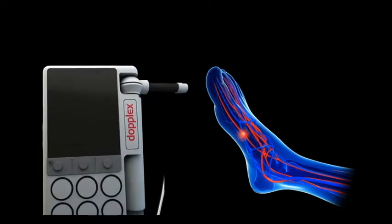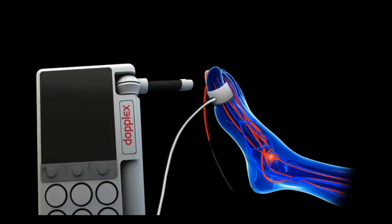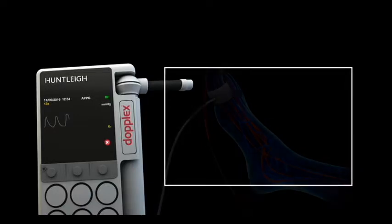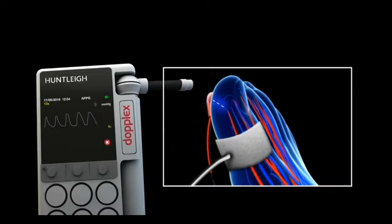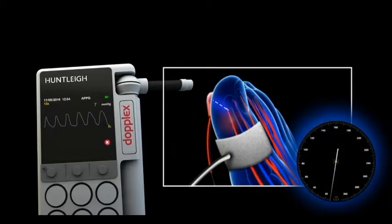Attach the cuff around the base of the great toe and attach the PPG sensor using the adhesive strip provided. The PPG signal is generated from the arterial microcirculation and is shown on the display.